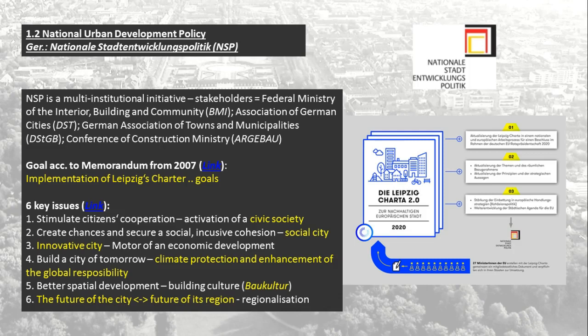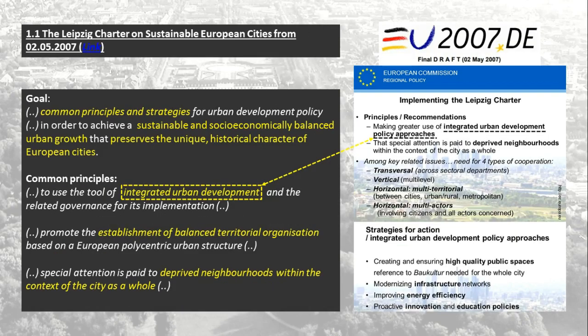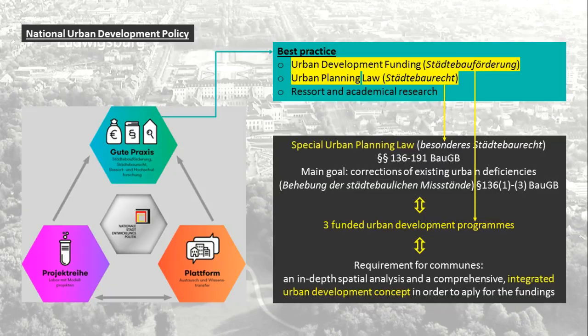National urban development policy focuses on six key issues, which resemble the key questions of the Leipzig Charter. This national policy makes a great emphasis in Germany on urban development fundings and urban planning law, whose main goal is to correct existing urban deficiencies — for example, through making use of diverse urban development funding programs. But in order to be given those funds from the government, the government requires an in-depth spatial analysis and a comprehensive integrated urban development concept.